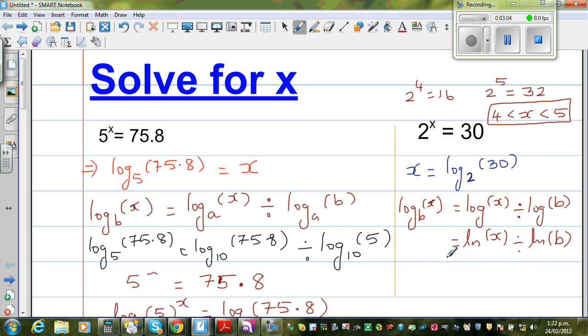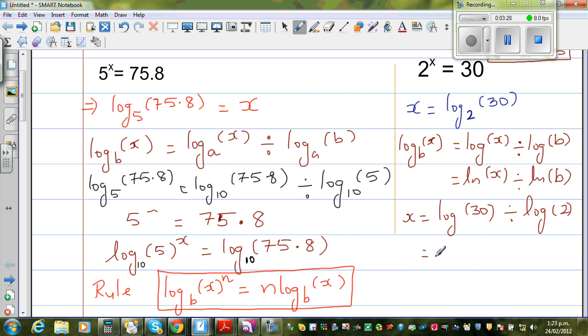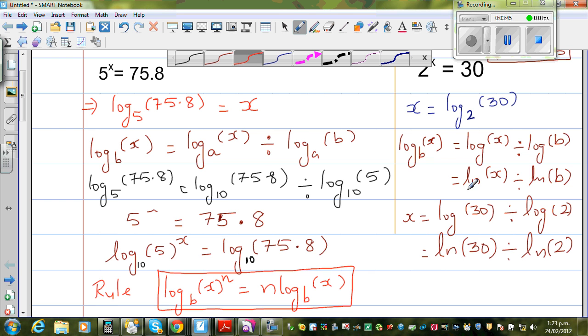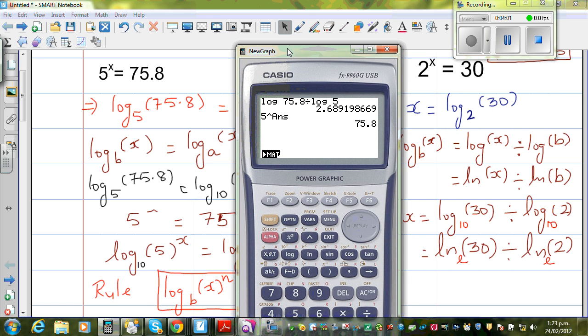So get your calculators out. In this case, x would be log of 30 divided by log 2, where the base is 10. Or there's also a key on the calculator called ln, which is natural log. So x equals natural log of 30 divided by natural log of 2. Here the base is 10 by default, and here the base is e. Let's use a calculator.